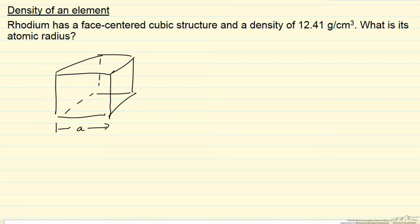Since it's a cubic structure, this is also a, and likewise this distance here is a. So a cubed is going to be the volume. We're interested in density, so the question is, what is the mass inside this cube of rhodium that has the face-centered cubic structure?